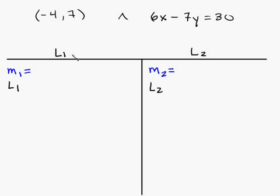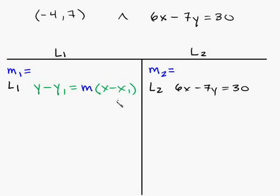When you're given this kind of problem, set this up for yourself like this. Line 1, line 2, make a t-table here, and then write m2, L2 for line 2, and m1, L1 for line 1. Well, line 2 is this: 6x minus 7y is equal to 30. And line 1 has to be constructed, so we have to form line 1, and we'll use the point-slope formula to do that.